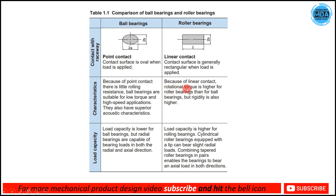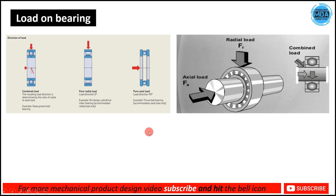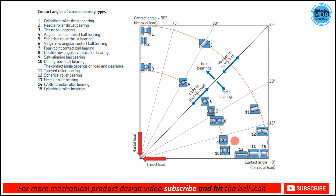There are two types of load applied on bearings. Radial load is perpendicular to the axis of the shaft. Axial load is aligned with the axis of the shaft — it acts in the direction of the shaft axis. Knowing which load is coming on the bearing is essential so that the proper bearing can be chosen.